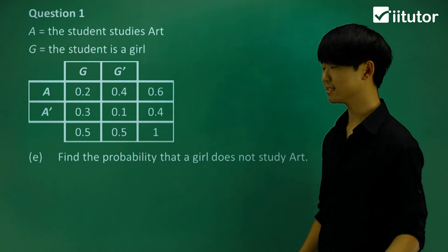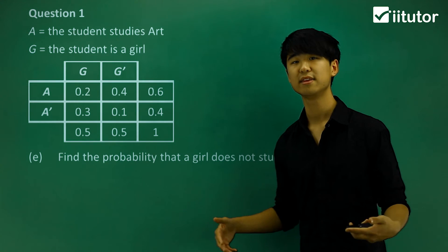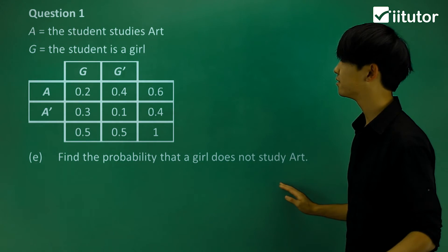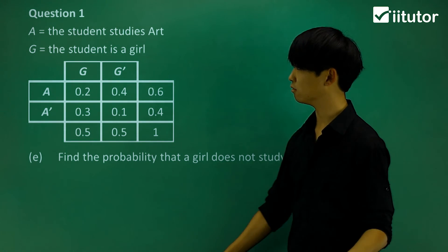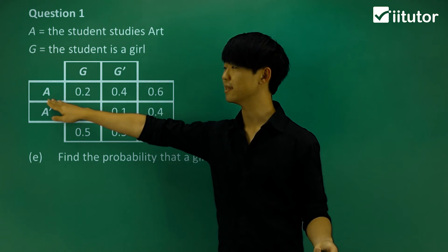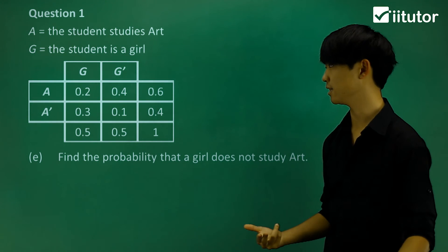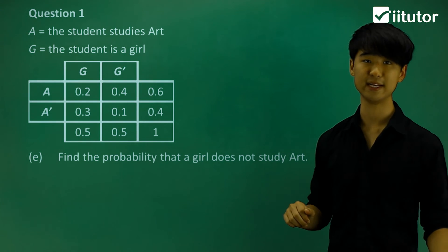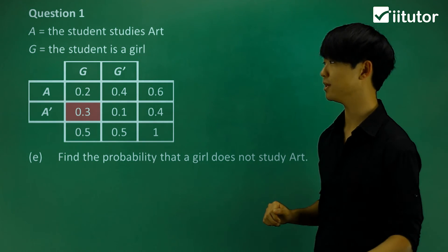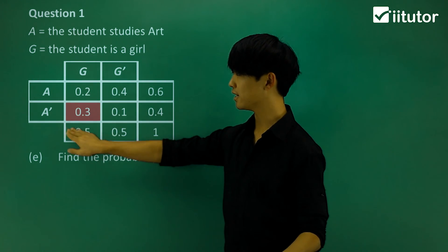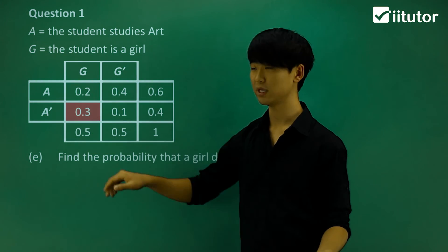In part E it says, find the probability that a girl does not study art. So she doesn't study art. A is the probability that she does study art, and A' is the one where she doesn't study art. And it also says that it needs to be a girl. Then it will be in this box here. If it's a girl and she doesn't study art, then it will be 0.3.